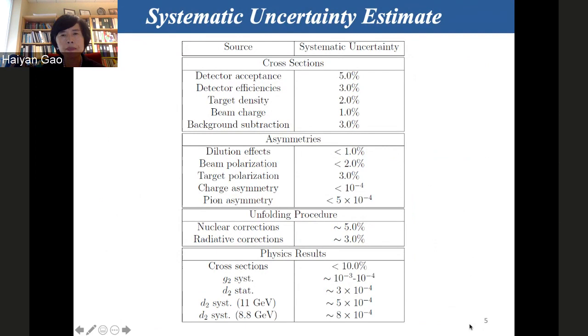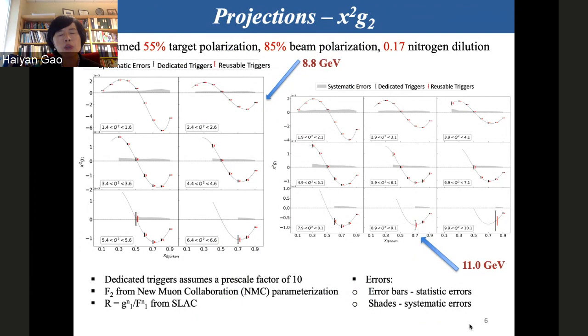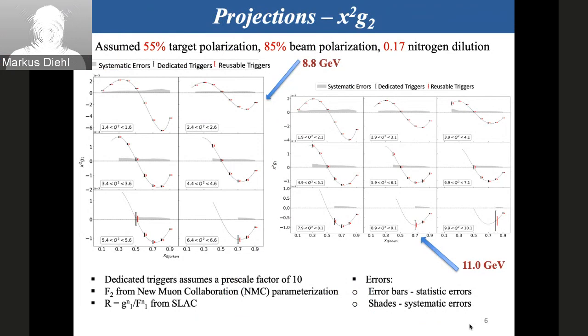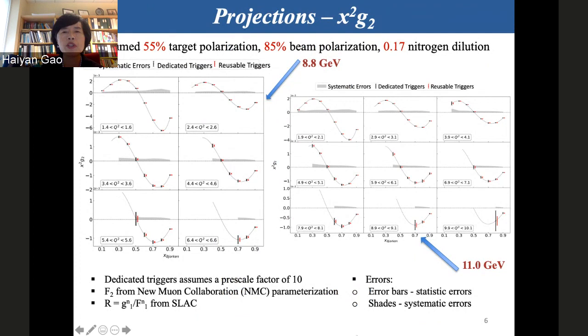You have about a minute left. Let me show you the projected results. What has been included? The target polarization 55 percent, beam polarization 85 percent, and also nitrogen dilution factor. We show you both 8.8 and 11 GeV projection. The systematic uncertainty I show as the band, and the error bars are the statistical. There are two different kinds of triggers. One is the dedicated, which is the pre-scaled factor of 10 for singles rate. The other is using or re-using the random coincidence trigger. You can see one is shown as black, the other is red. The left is 8.8 and right is 11.0 GeV. With higher beam energy, of course, one can go to much higher Q-square. The projections are shown in terms of Q-square and also X-Bjorken.